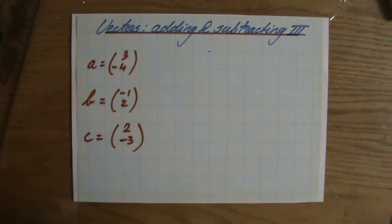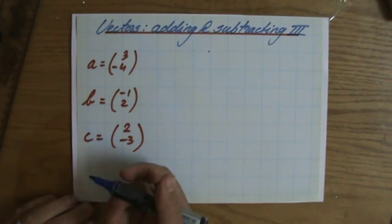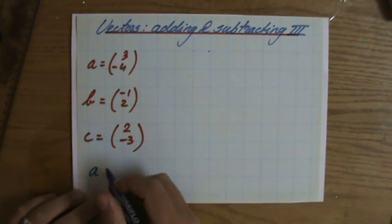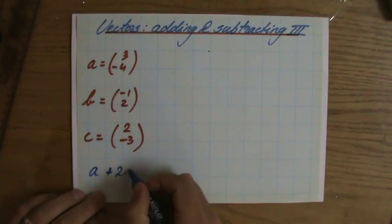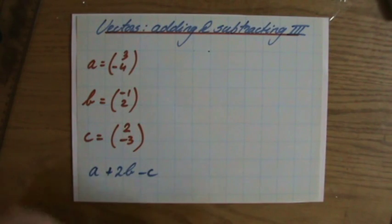Excellent that you're here, because we're still adding and subtracting vectors. I'm going to go a little bit wild now. Let's say we have A plus 2B minus C. So I have those three column vectors: A equals 3, -4; B equals -1, 2; and C is 2, -3.